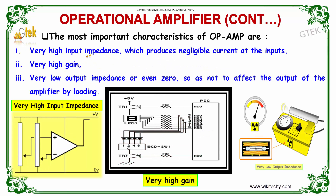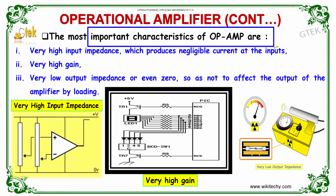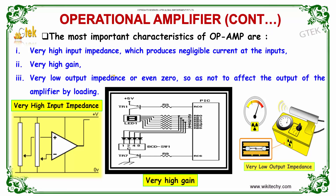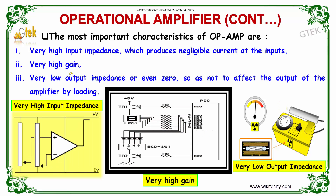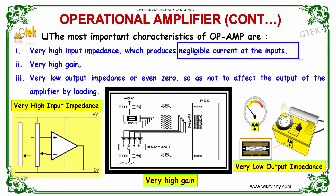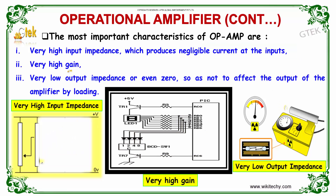Let us now discuss the most important characteristics of the operational amplifier. The first and foremost characteristic is that this operational amplifier has a very high input impedance, which produces negligible current at its input. You can see here how it has been depicted.